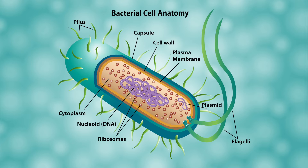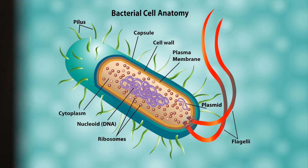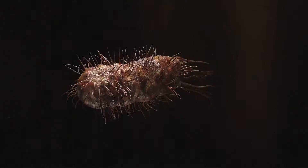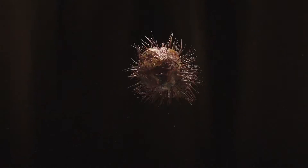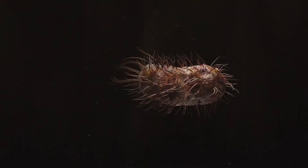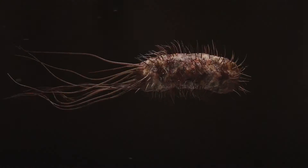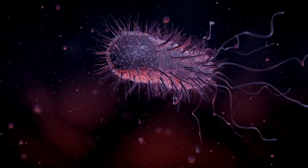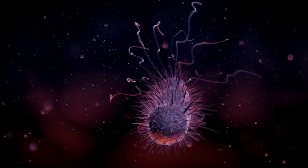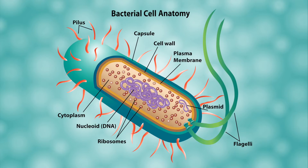The last structures we'll look at are on the very outside of a prokaryotic cell. They include the flagella, which is a long, tail-like piece that allows the cell to move — it looks a bit like a fish swimming through water. You'll also notice smaller, hair-like pieces all over the cell. These are pili, and they help the cell attach to surfaces and sometimes exchange genetic material with another cell.